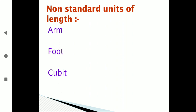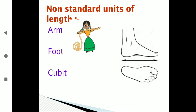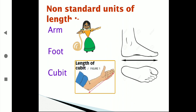At that time, they didn't know what a scale was or how to measure length using a scale. So they used their arm — they would hold it like this and measure length. Sometimes they used the foot to measure length, and sometimes they used the cubit — from the fingers to the elbow. That length is called a cubit.